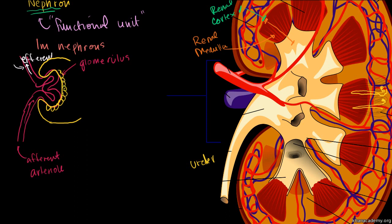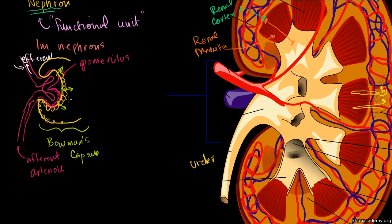The actual capillaries have cells lining them. Blood comes in at really high pressure — this is very porous. The surrounding cells called podocytes are a little more selective in what gets filtered out. About one fifth of the fluid ends up going into the space called the Bowman's space inside the Bowman's capsule. We can't call it urine yet — it's only filtrate right now.